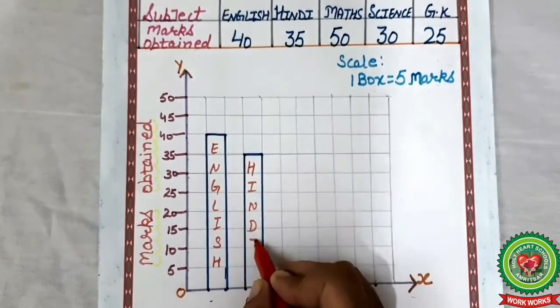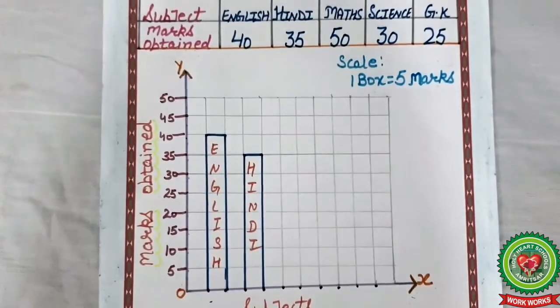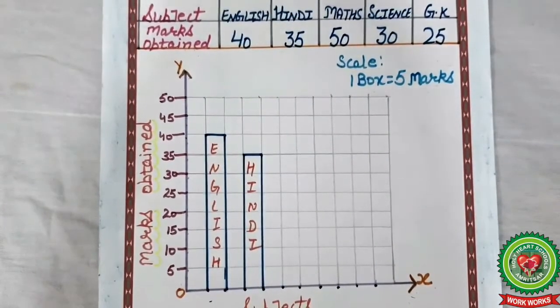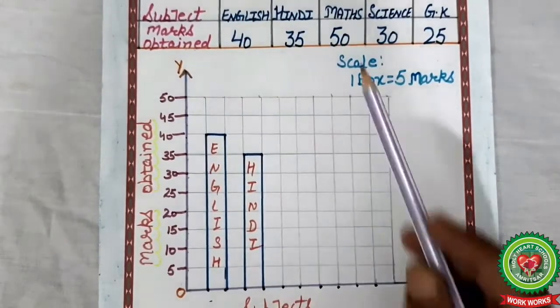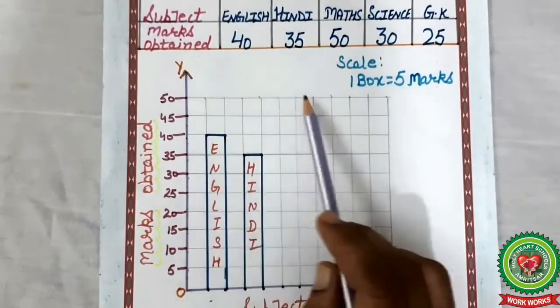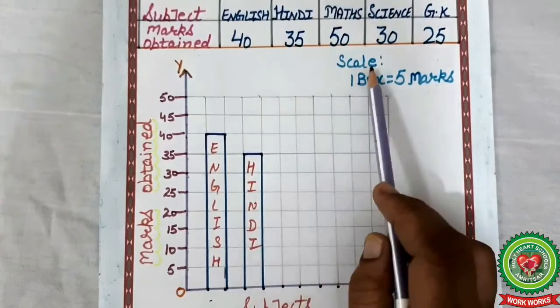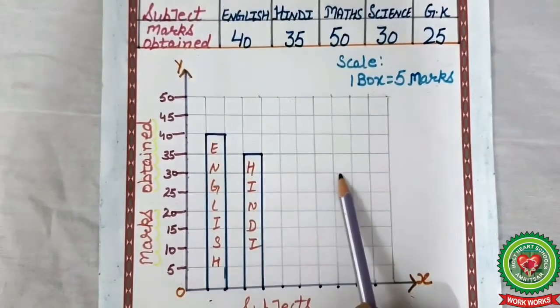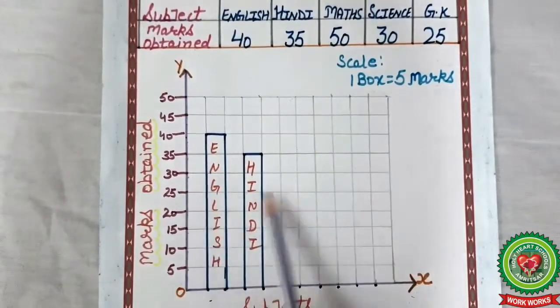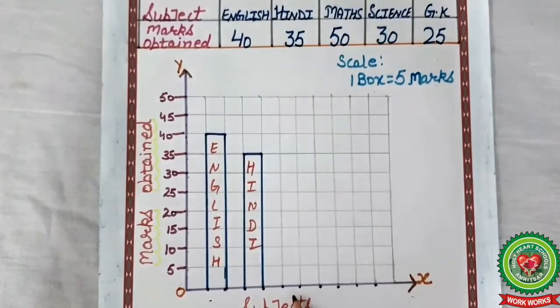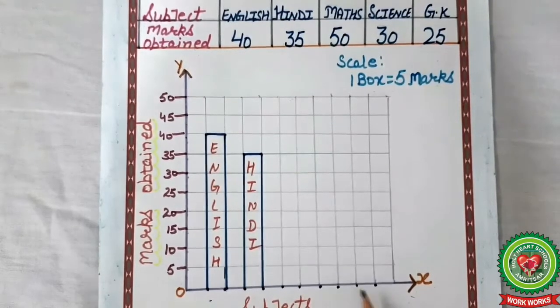Similarly students, we will draw another column for Maths. How many marks? 50. It will come here. Now Science: 30. And GK: 25. Therefore, for every subject, you will take the next two points.